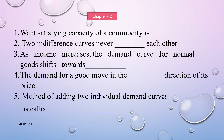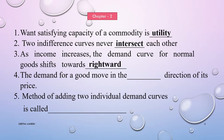In the second chapter, consumer behavior, let us discuss a few important fill in the blanks. The satisfying capacity of a commodity is utility. Two indifference curves never intersect each other. As income increases, the demand curve for normal goods shifts rightwards. The demand for a good moves in the opposite direction of its price. The method of adding two individual demand curves is called horizontal summation.